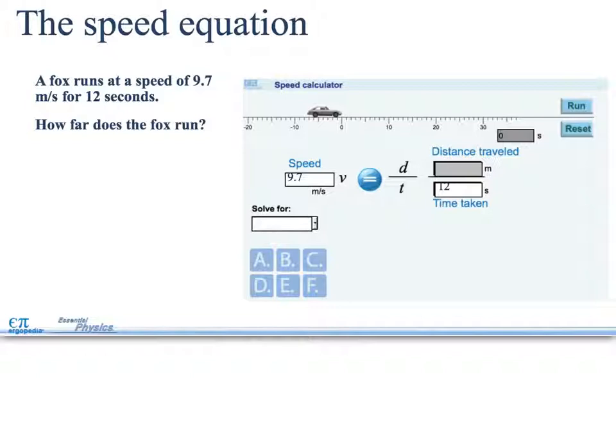A fox runs at a speed of 9.7 meters per second for 12 seconds. How far does the fox run? So if you put in here, what do you get? This time we had to rearrange for distance, multiplying t up, so you got 116 meters.